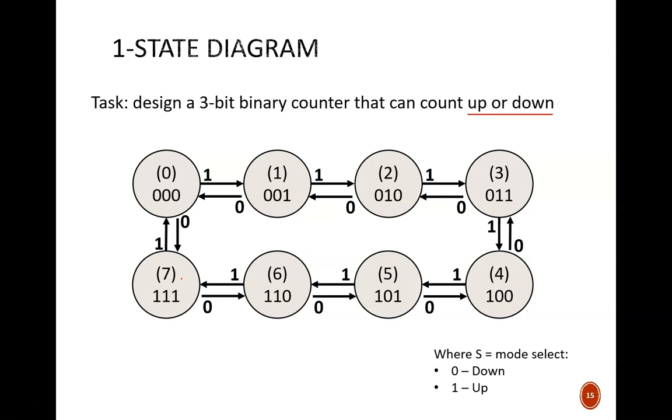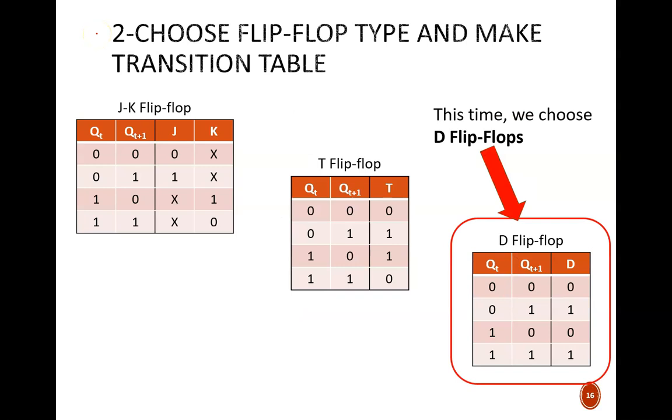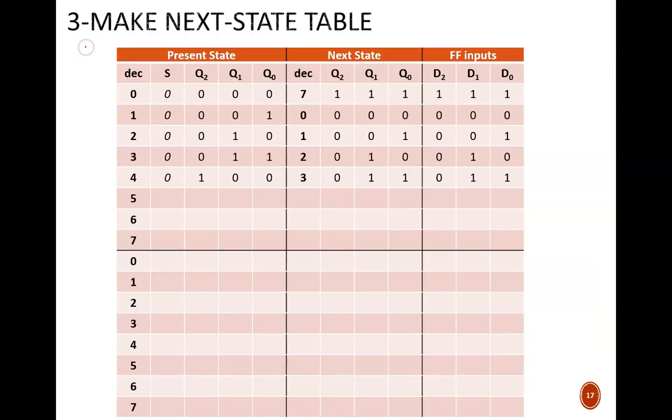As usual, the state diagram is the linchpin that makes the design work. If we understand all the components of this step, all that follows is procedural. Step two is to choose the flip-flop type and make the transition table. I chose D flip-flops this time, which actually makes for some pretty complicated logic as we'll see at the end.